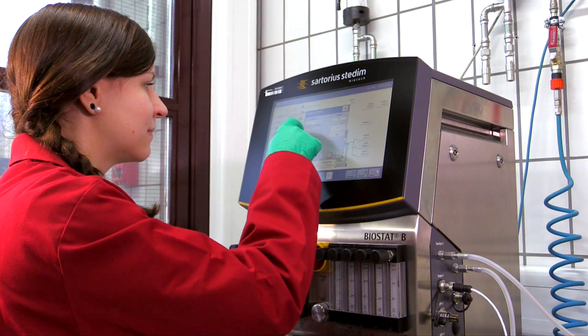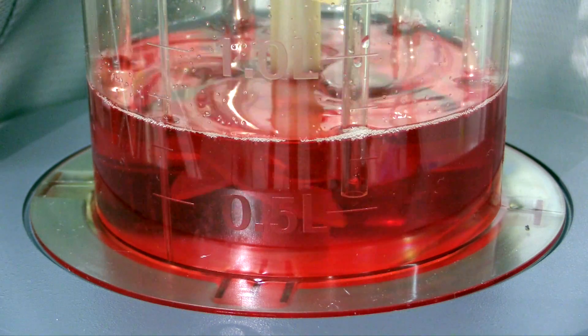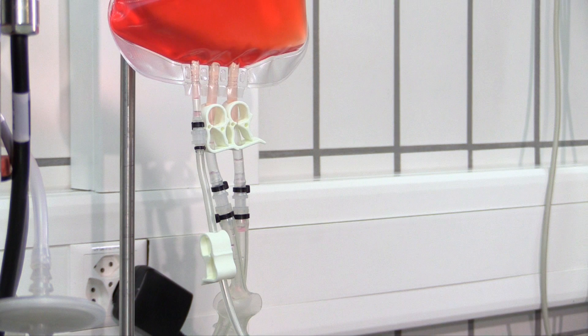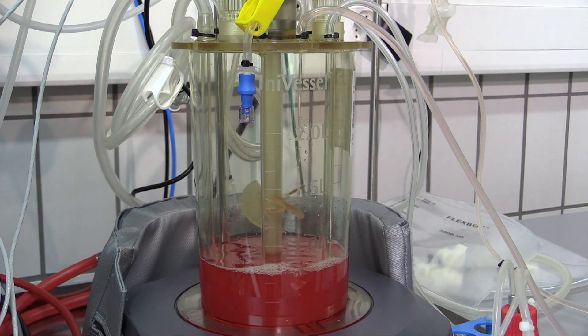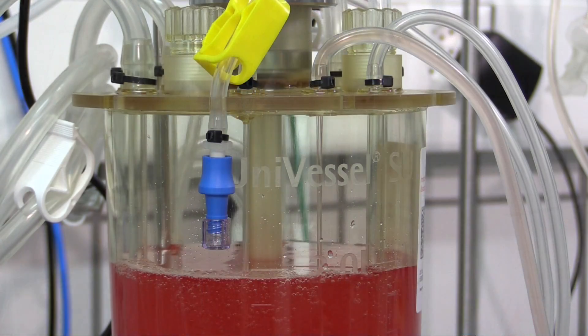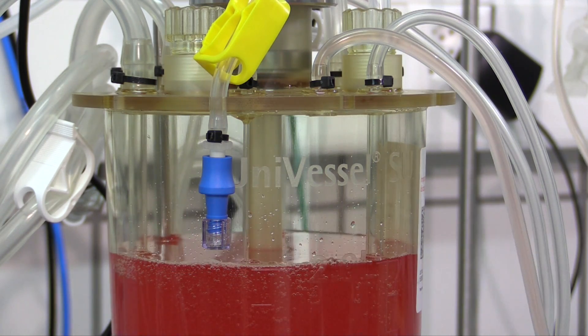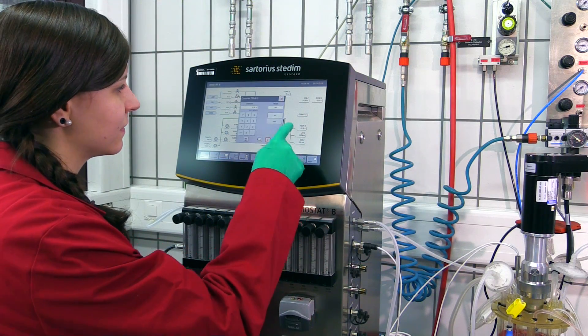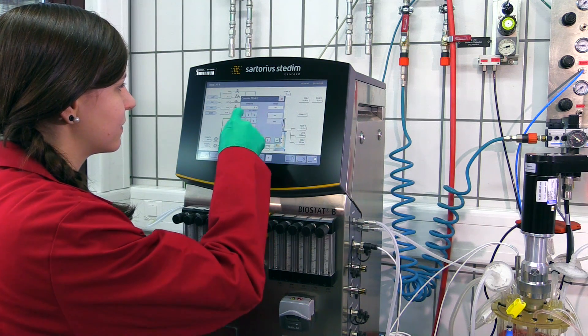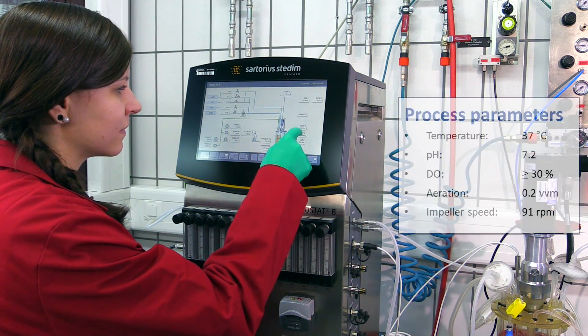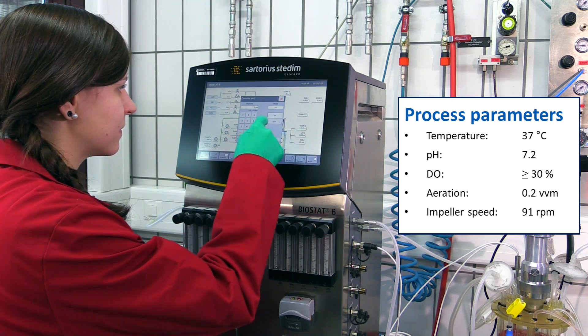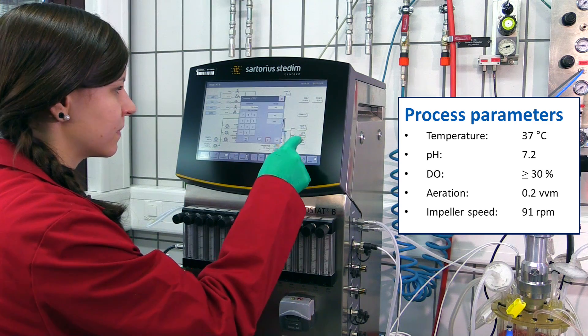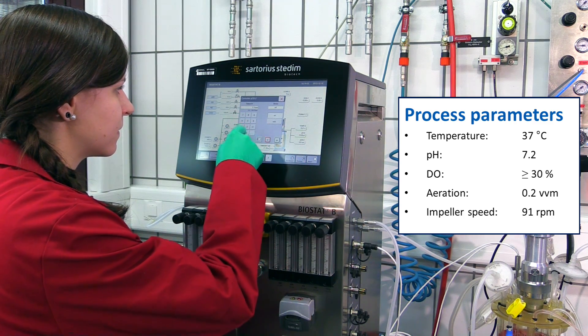After the cell attachment process has finished, continuous agitation at 91 RPM is performed. The medium volume must be increased to a final working volume of 2 liters. The clamp on the medium bag is opened and the medium is transferred to the bioreactor until the 2 liter point is reached. This is the maximum working volume of the Univassel SU. Next, agitation, temperature, pH and dissolved oxygen regulation and headspace aeration are all switched on. The cell expansion process is carried out at 37 degrees Celsius, pH 7.2, dissolved oxygen greater than or equal to 30%, and headspace aeration of 0.2 VVM.